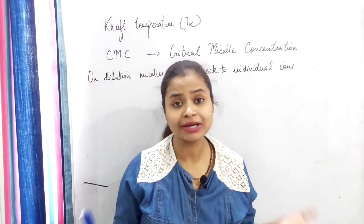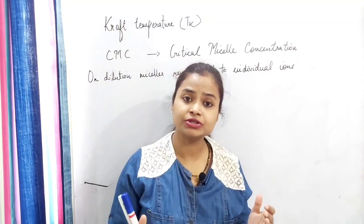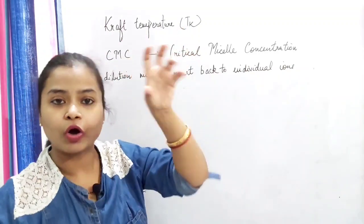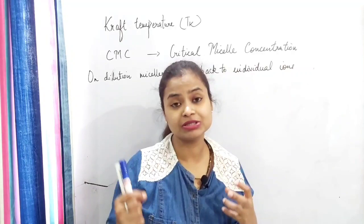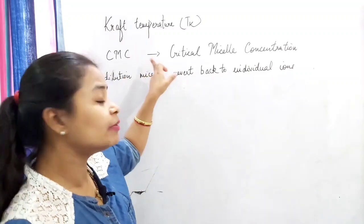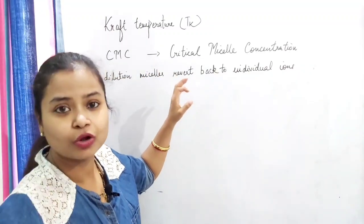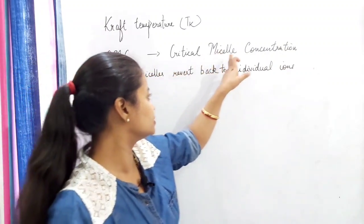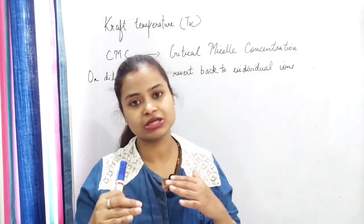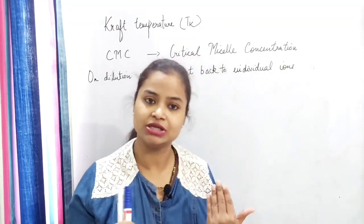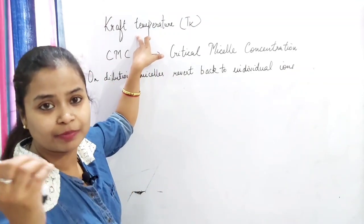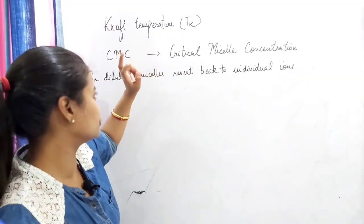The formation of micelles cannot occur at any temperature. Micelle formation occurs above a particular temperature, known as the Kraft temperature, also denoted as TK. Also, micelle formation occurs above a particular concentration called CMC — that is, critical micelle concentration. So micelle formation will occur when temperature is above TK and concentration is above CMC.